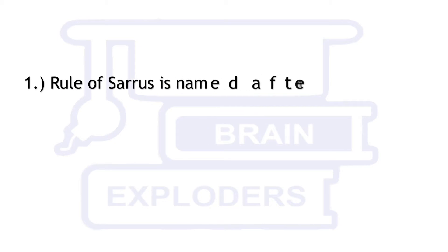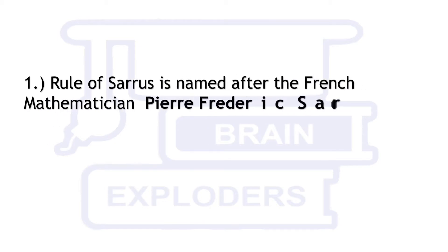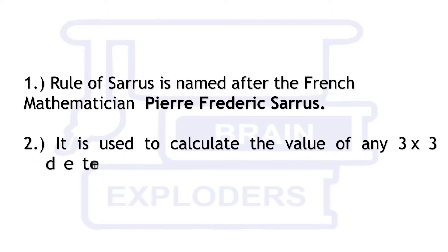Rule of Sarrus is named after the French mathematician Pierre-Frederic Sarrus. It is used to calculate the value of any 3x3 determinant in an easy way.